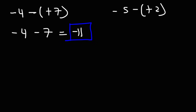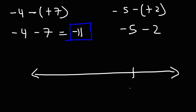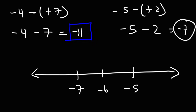Now negative 5 minus positive 2. A negative times a positive is a negative, so this becomes negative 5 minus 2. Using a number line, if we start with negative 5 and subtract by 2, we need to travel 2 units to the left. So this will take us to negative 7. That's the answer for the fourth example.